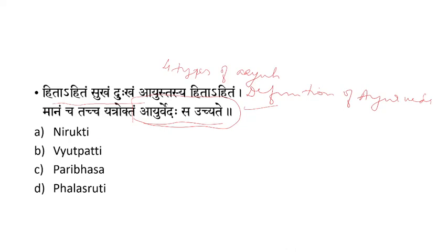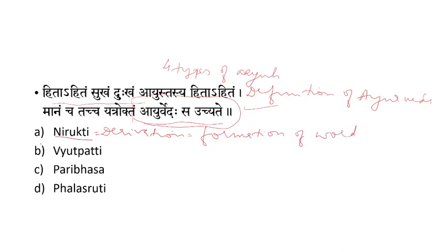The first option is about Nirukti. If you know the answer for each of the four options, it is very easy to get the answer for the question. What is Nirukti? The meaning of Nirukti is etymological derivation — it is the formation of the term, the formation of the word Ayurveda. That is called Nirukti. But here the sloka is a definition, so that is not the answer.